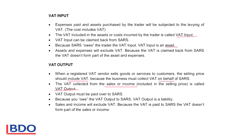VAT output must be paid to SARS, so it is money that is owed to SARS and therefore VAT output is a liability. The sales and income in your income statement will exclude the VAT because the VAT charged on the sales or the income does not belong to the business — it is paid over to SARS. So it will not form part of your sales or income account in the ledger or in the financial statements.